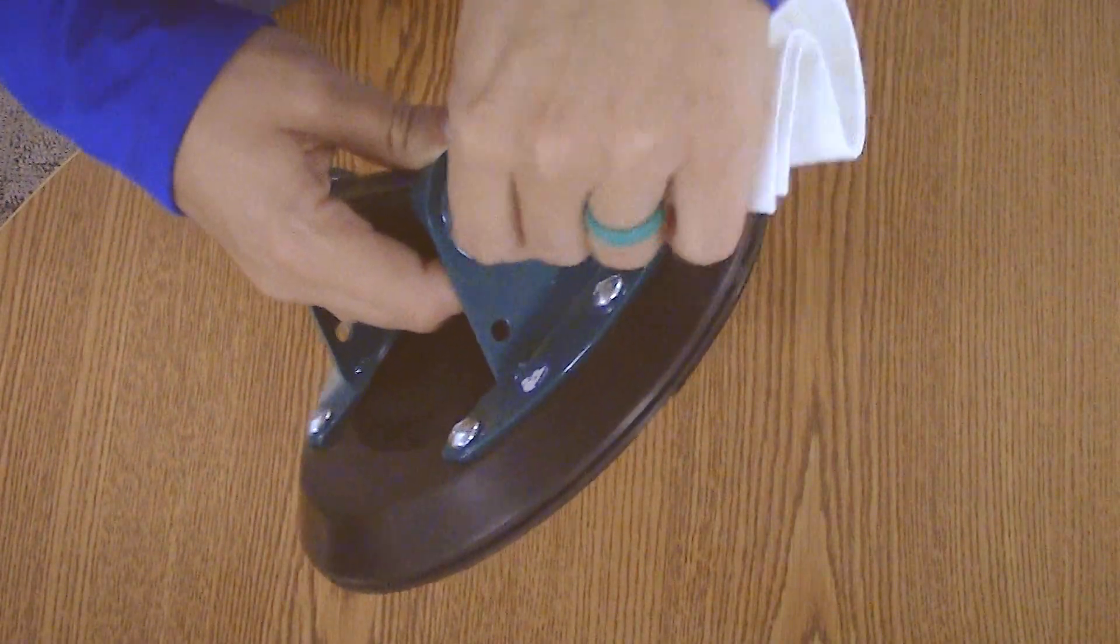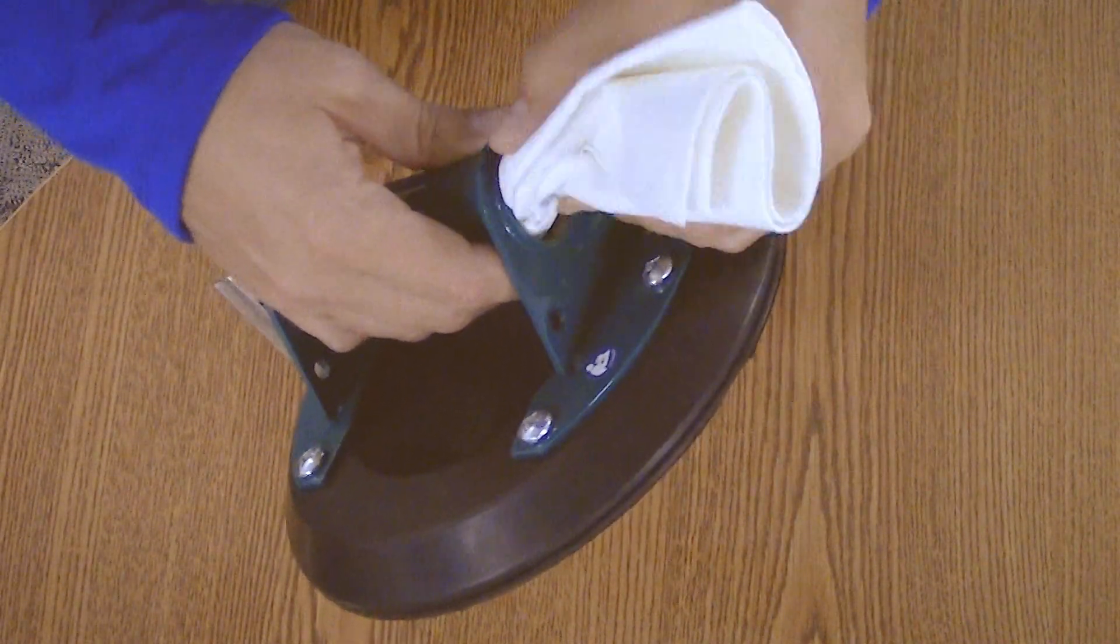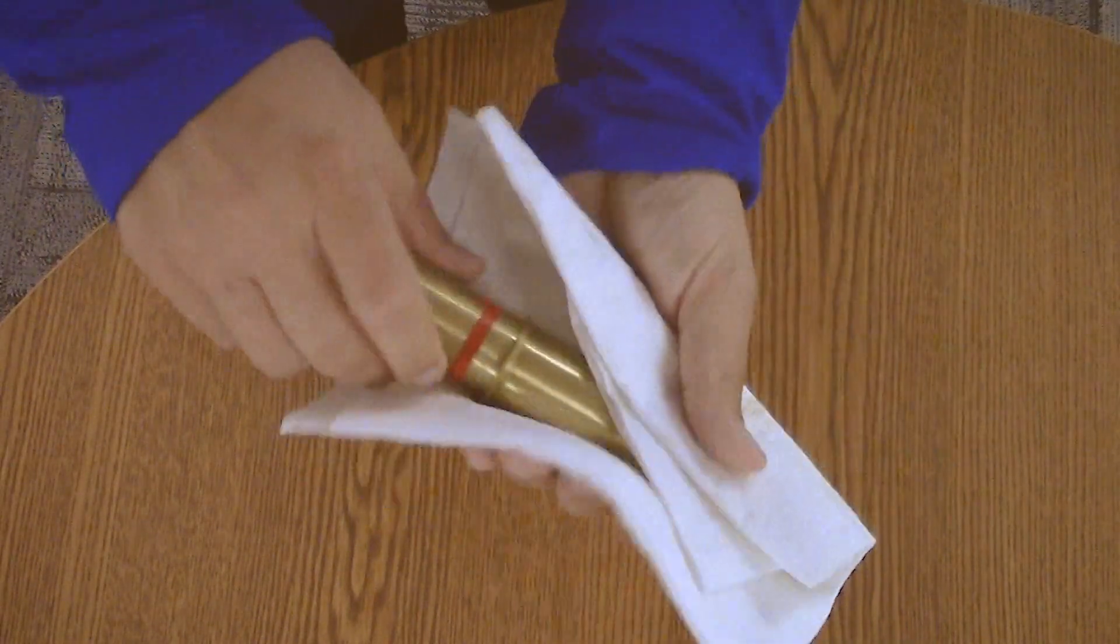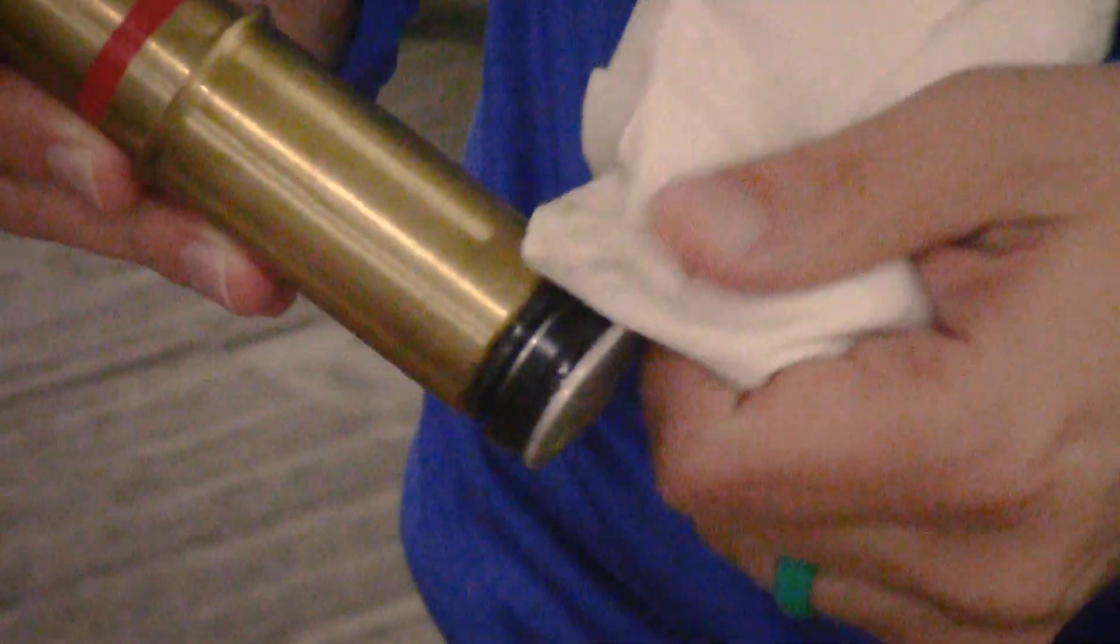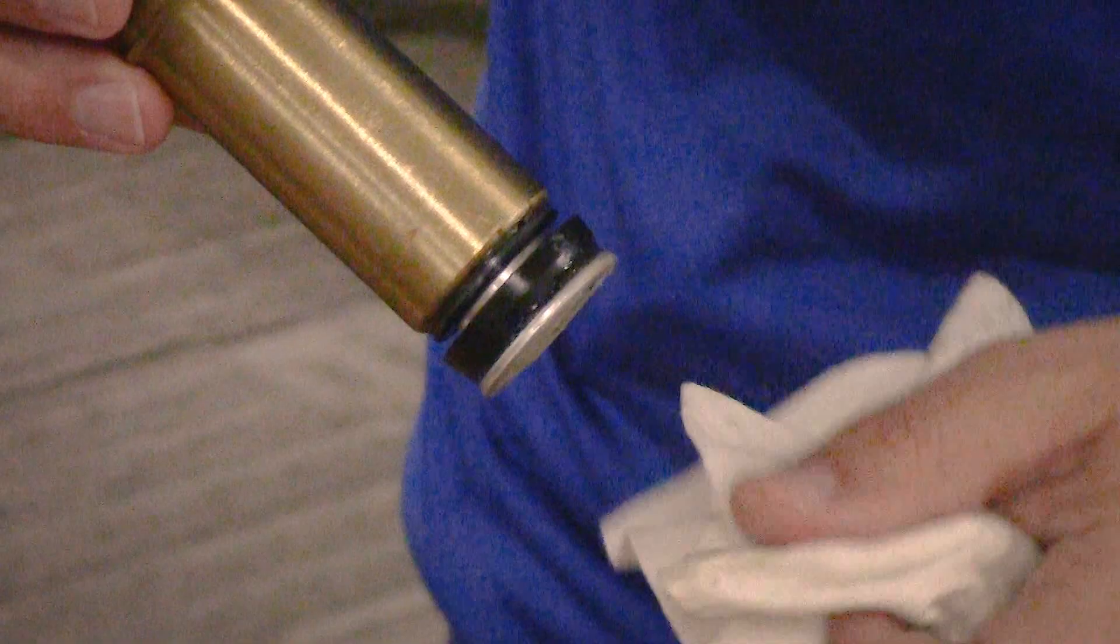After the plunger has been removed, use a soft cloth to wipe both the inside of the handle and the plunger. Look closely at the back of the U-cup at the end of the plunger to make sure it is clean as well.